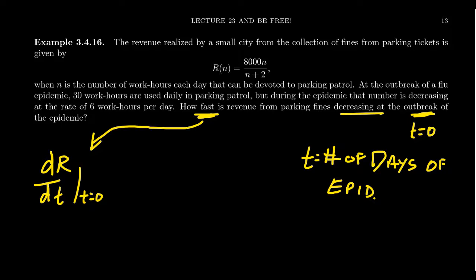How are we going to figure that out when revenue is a function of N? This is where the chain rule comes into play. The change of revenue with respect to time is equal to the change of revenue with respect to N, the work hours, times dN/dt. The chain rule tells you that.